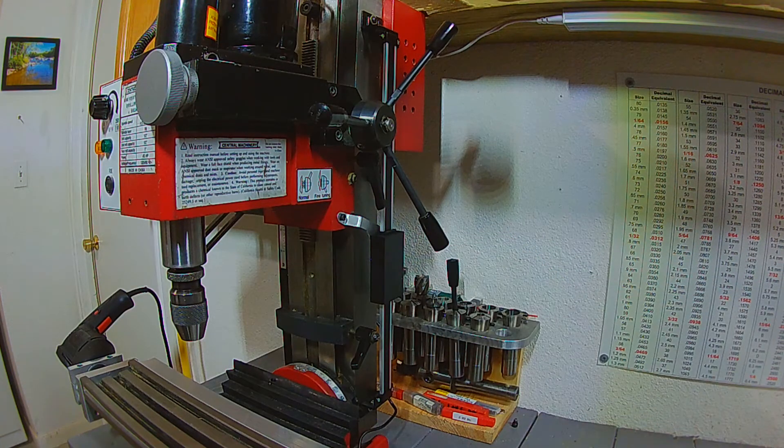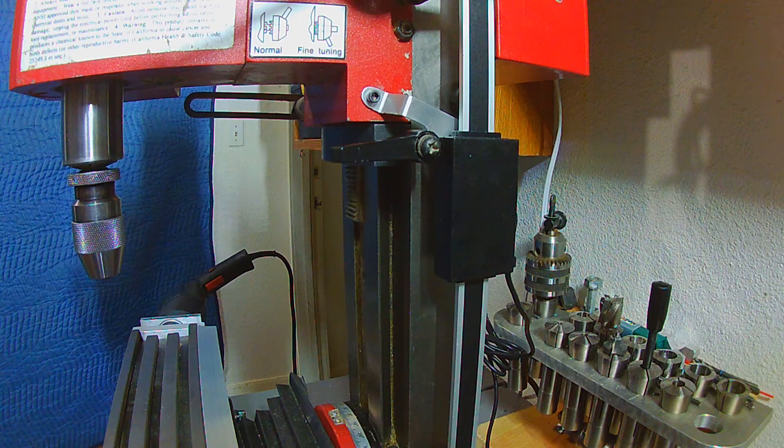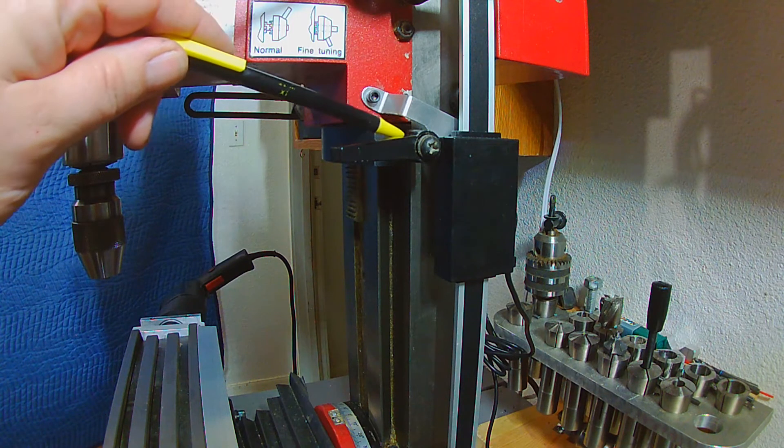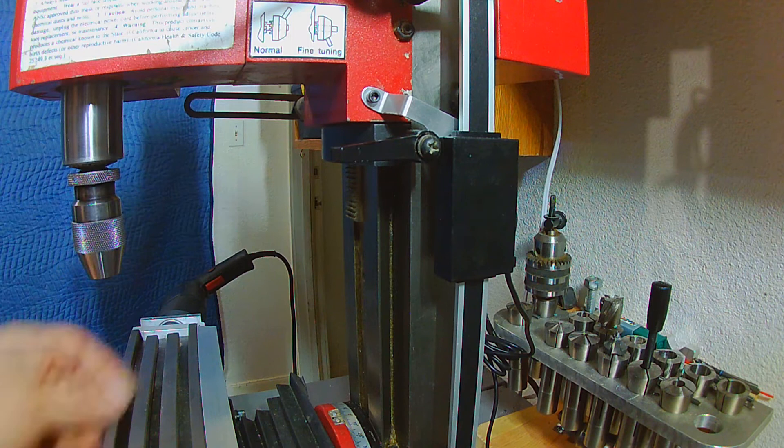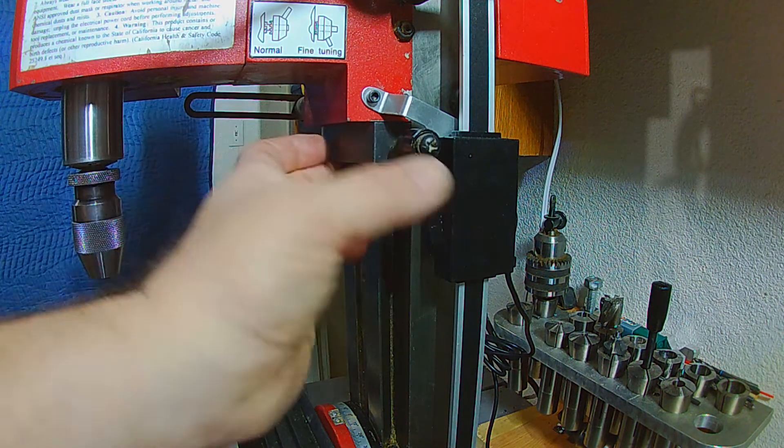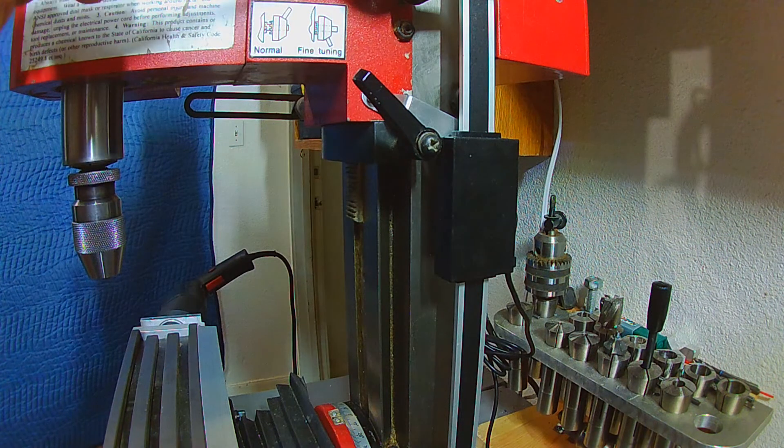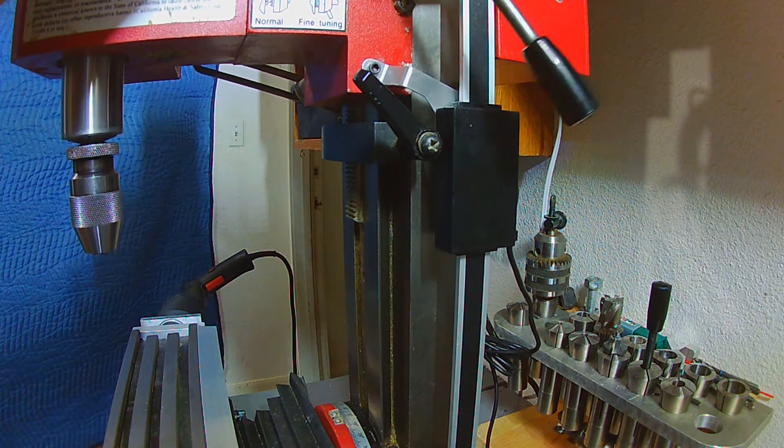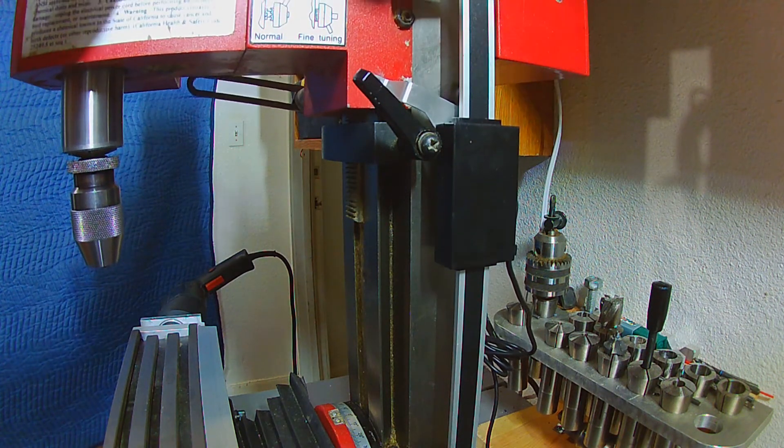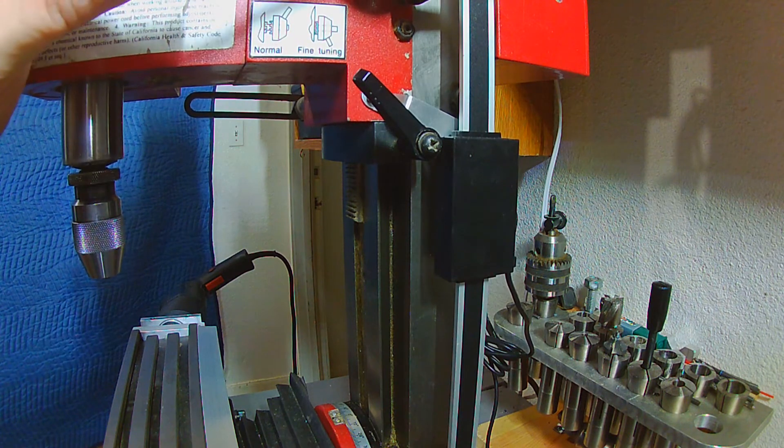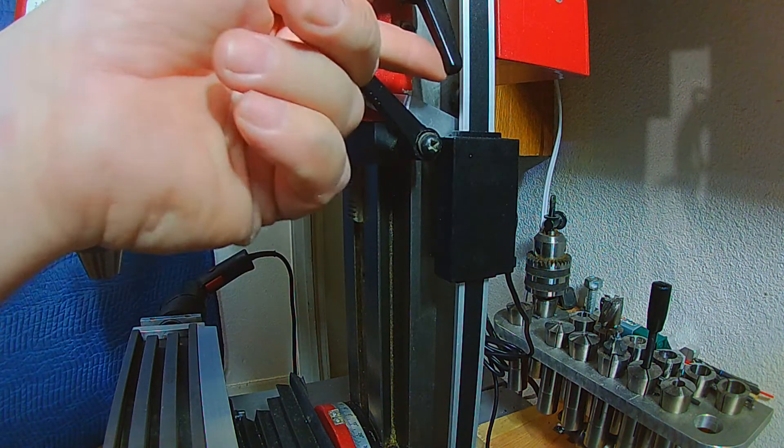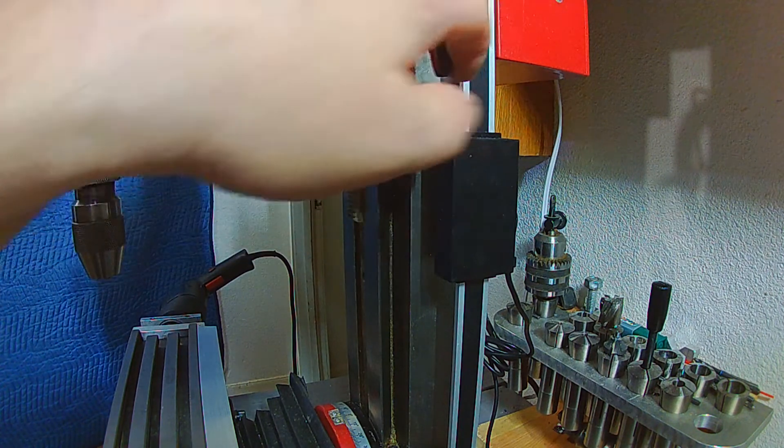The bracket attaching the reader to the mill head should be made to provide clearance for the Z stop. Remember to move things around a bit to make sure the parts don't interfere with each other. Also, it should not interfere with the Z axis locking screw arm.